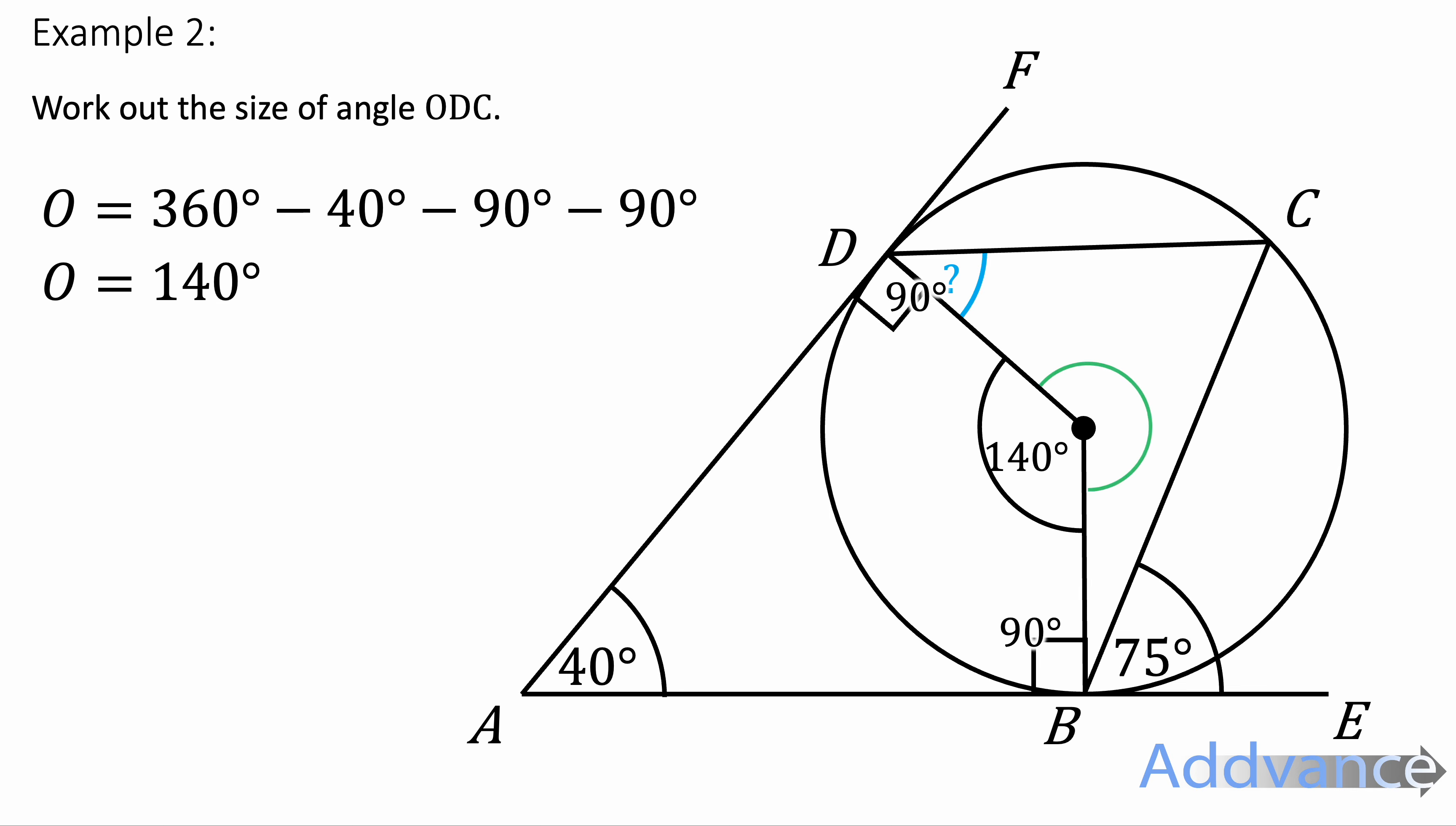To find the angle opposite that here, well, they will add up to be 360. So I do 360 minus 140 is 220 degrees.